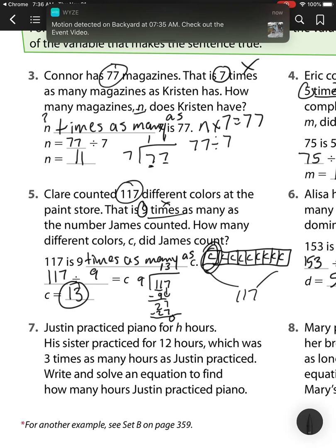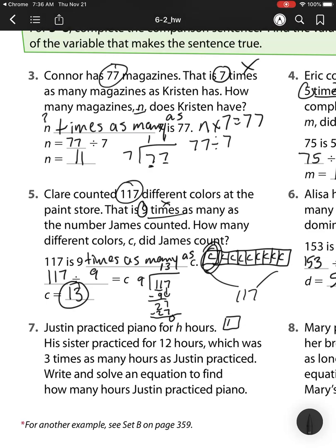Our next one, Justin practiced the piano for h hours. So here is Justin's h hour. His sister practiced for 12 hours, which is three times as many. So that means there's three boxes. And it says she practiced for 12 hours. So that's going to be my total of 12.